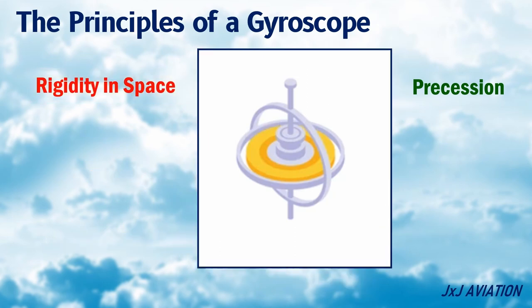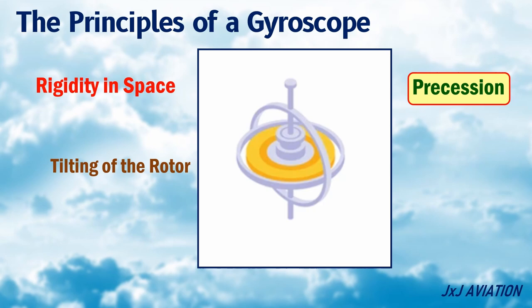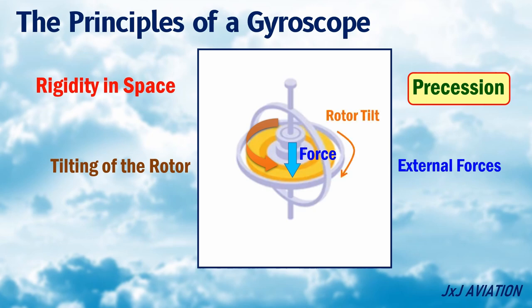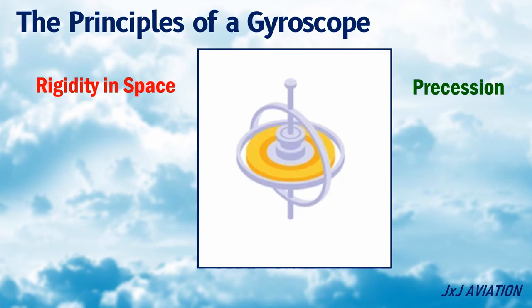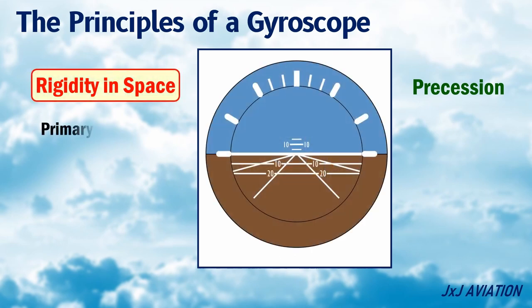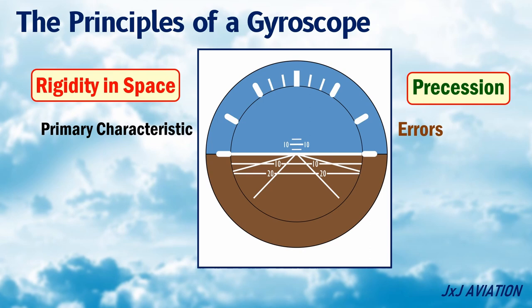Precession refers to the tilting of a rotor because of external forces when the rotor is spinning. When a force acts on the spinning rotor, the rotor will tilt as if the force was applied 90 degrees in the direction of rotation. The rigidity in space principle is the primary characteristic which makes a gyroscope useful in an aircraft's attitude indicator. The principle of precession can cause errors in the instrument's readings.